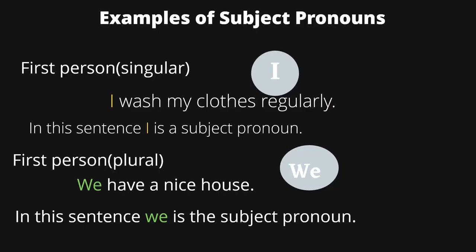Examples of subject pronouns. First person singular — first person means you are referring to the person speaking. So 'I am speaking.' 'I wash my clothes regularly.' In this sentence, 'I' is a subject pronoun. First person plural would be 'we.' 'We have a nice house.' In this sentence, 'we' is the subject pronoun.